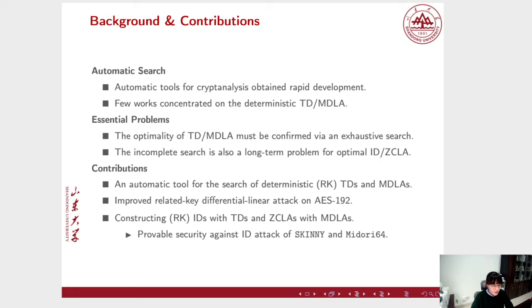Among the few works realizing the search of TD and MDLA, the optimality of the distinguisher should be confirmed via an exhaustive search over all possible input differences or masks. It cannot be afforded when the internal state of the primitive has a considerable number of words. The incomplete search is also a long-term problem in the search of optimal ID and ZCLA.